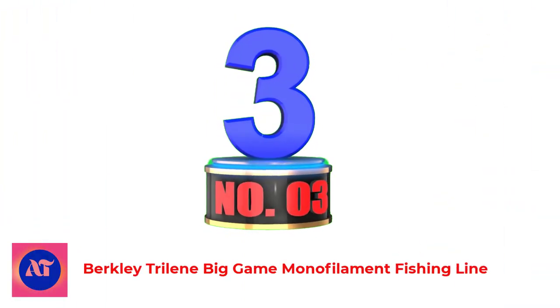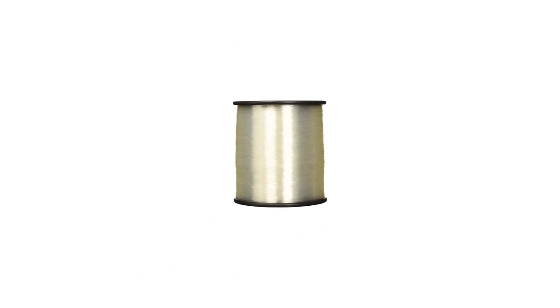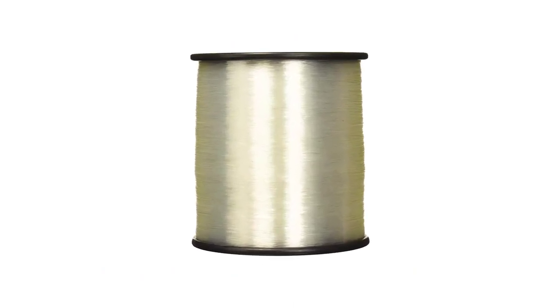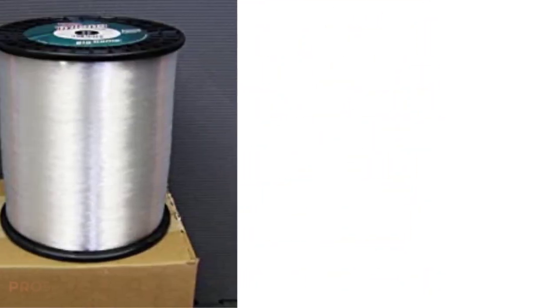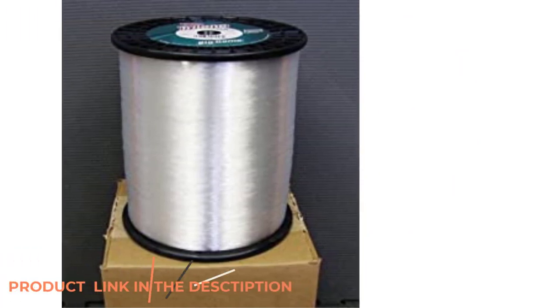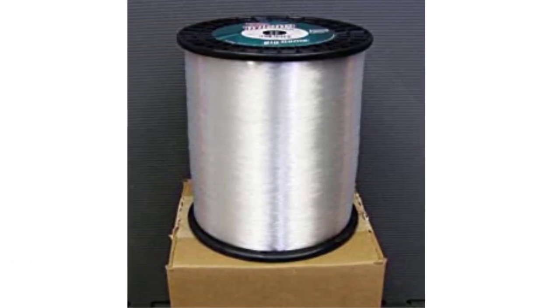Number 3. Berkeley Trilene Big Game Monofilament Fishing Line. This Berkeley Trilene Monofilament Fishing Line comes in a range of sizes and weights from 10 pounds to 100 pounds, as well as a variety of colors to suit your fishing conditions. The line is built to be shock-resistant with controlled stretch, designed to give you more power to fight big fish.